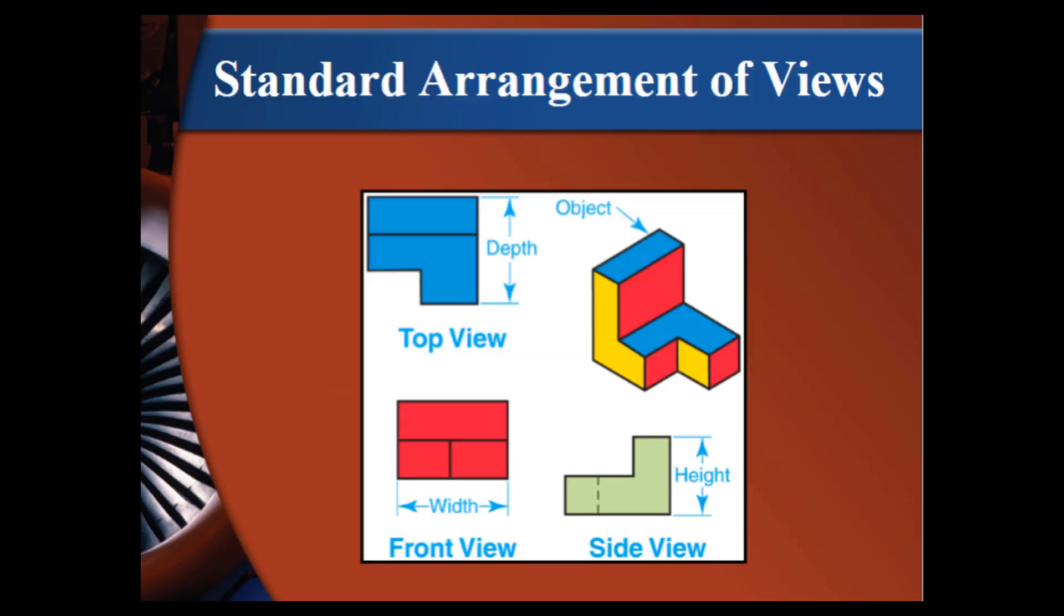So here are the standard arrangement of views. If you look on the right-hand side, we have an object shown as an isometric or three-dimensional drawing. If you look at the blue surfaces, those are the surfaces that if I look down on the top of that object, those are the surfaces that I would see. If you see the red areas and look at the front view, those are the surfaces that I see. And if you look at the side view on the right side of the object, that is what I would see. You see there is a hidden line.